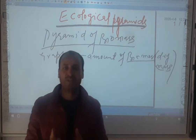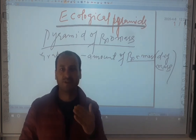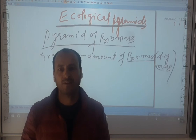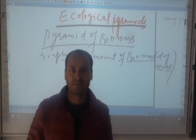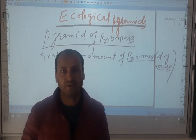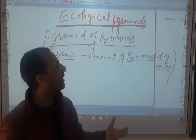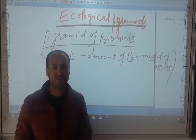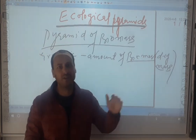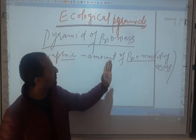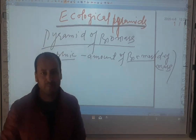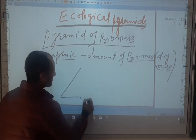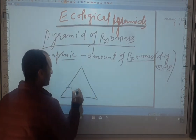How much amount of organic matter has been accumulated at each trophic level — be it primary consumer, secondary consumer, tertiary or other consumers — meaning how much amount of dry mass, or dry weight, or biomass accumulation has occurred at each trophic level. This is what we call the pyramid of biomass.